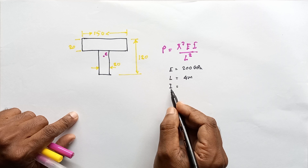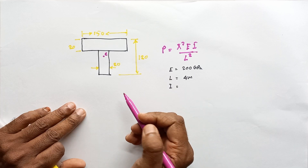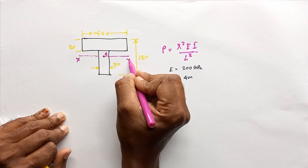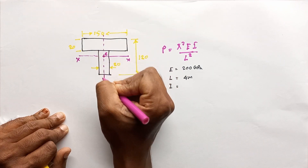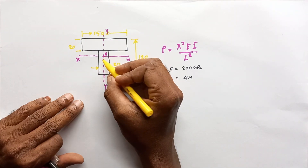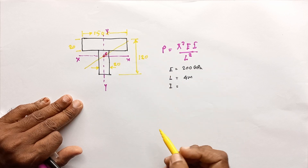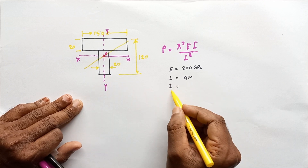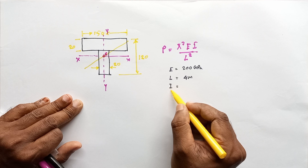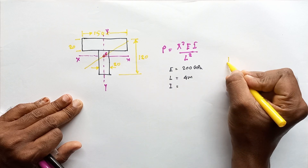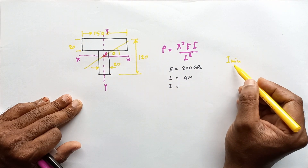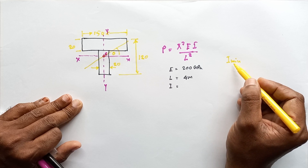When calculating the I value, the problem is which I value to substitute. We can draw an infinite number of axes through the area centroid — for example, the horizontal axis XX and the vertical axis YY. Through this centroidal point we can draw infinite axes, giving infinite second moment of area values. Among these, we have to substitute the minimum I value. Around the minimum I value the buckling load minimizes.